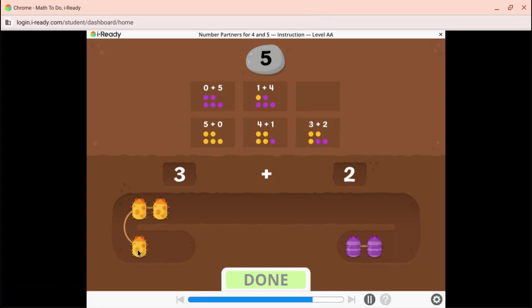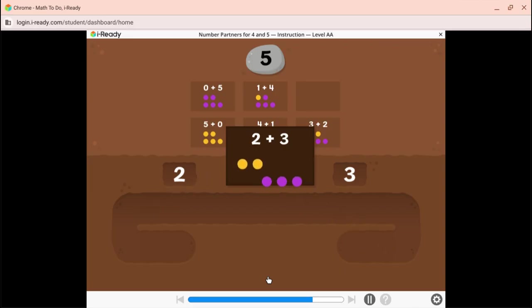We already have that way to make five. Try moving over a different number of bugs. Two yellow bugs and three purple bugs makes five bugs.